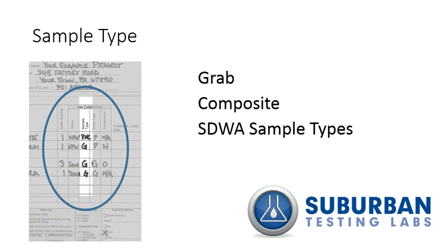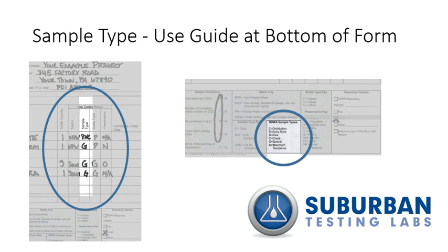Here's where you can indicate grab or composite, but in the case of Safe Drinking Water Act reporting, it must be the description of where the sample was taken. For example, was it raw, an entry point sample, or taken in the distribution system? Reference the sample type key at the bottom of the Chain of Custody for guidance, or call and speak with our Project Managers for guidance on the appropriate sample type.